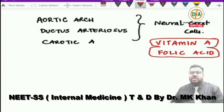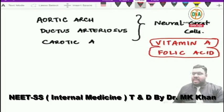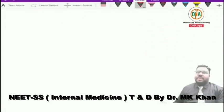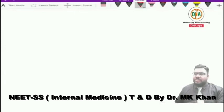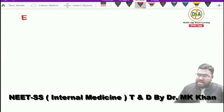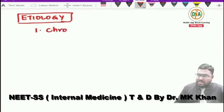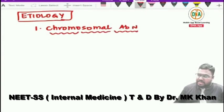Now let us discuss the etiology of congenital heart diseases. Congenital heart diseases are classified into right-to-left shunts, left-to-right shunts, cyanotic congenital heart disease, and obstructive lesions — left and right ventricular obstructive tract lesions. What is more important for the exam is the etiology. Most of the time, etiologies relate to chromosomal abnormalities.